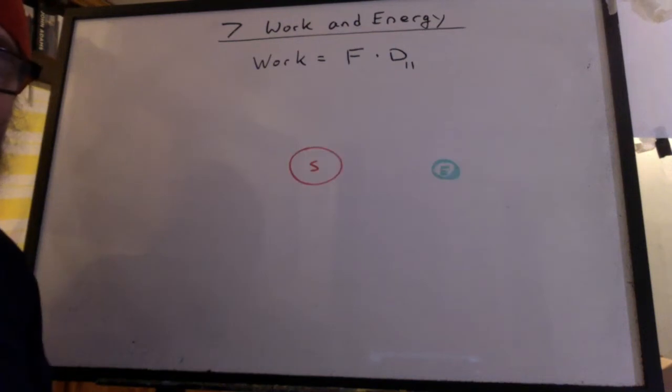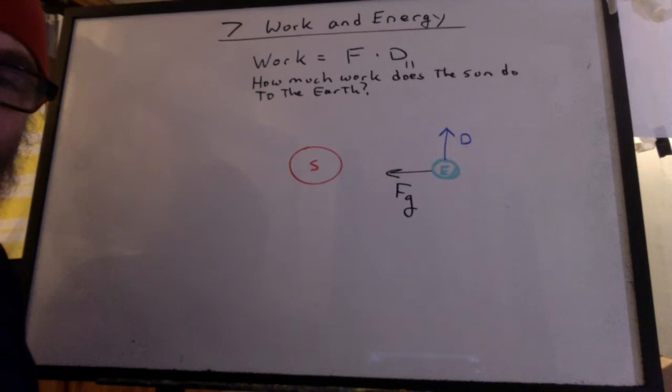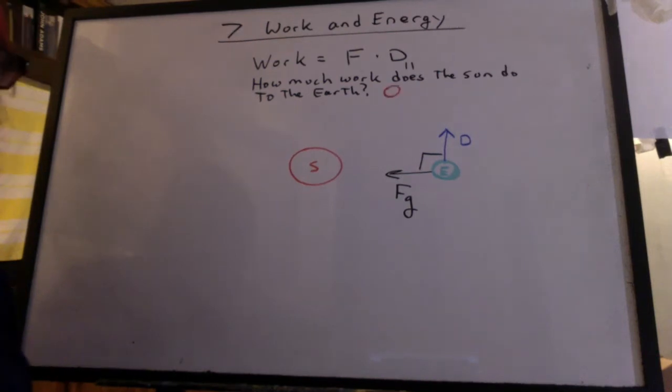Here's the sun and the earth. How much work does the sun do to the earth? There's the force. But since the earth is moving around the sun, the force is always perpendicular to any distance at any moment in time. There is no component of the force parallel to that distance. So the answer is zero.